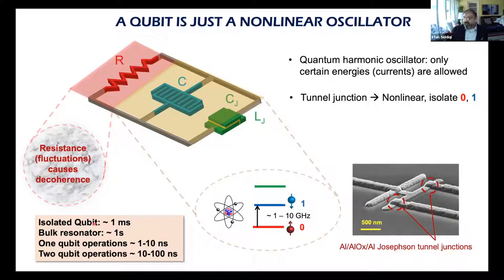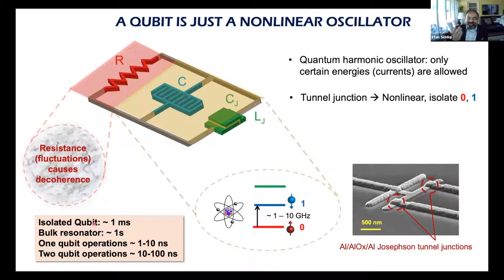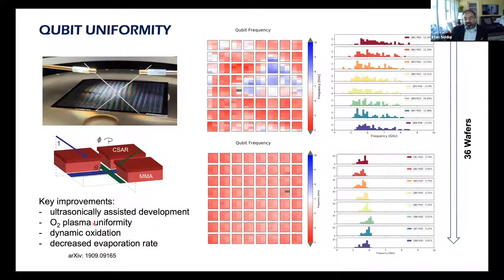Moving from one qubit to many qubits to wafers full of qubits, one encounters all sorts of fluctuations. We typically build 6-inch wafers with roughly 64 one-centimeter-by-one-centimeter chips, each with 8 qubits. The color code shows the target frequency, but the histograms reveal the actual spread across 36 chips. Between 4 and 10 GHz the spread was quite poor — about 12% error in resistance or current — meaning we had poor frequency control across the wafer.